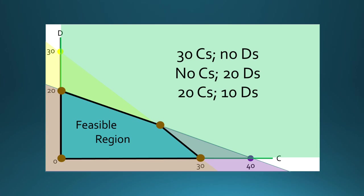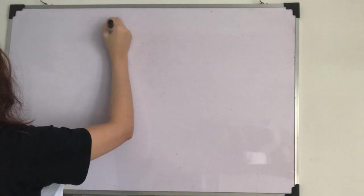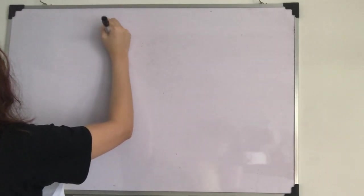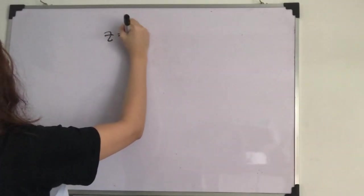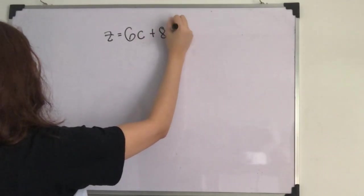Let's look for the combination that gives the highest margin in total. Now, let's look for the combination that gives the highest margin in total. As you can see, the objective function of Z is equal to 6C plus 8D.